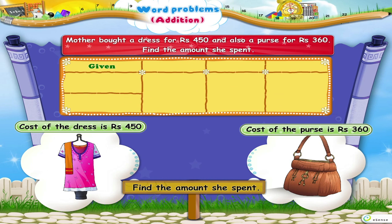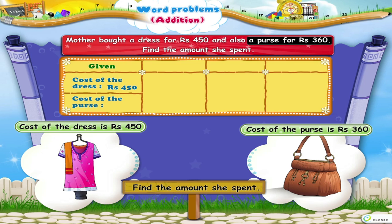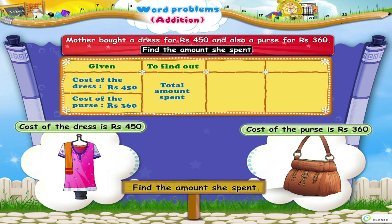What is given to us: cost of the dress is rupees 450, cost of the purse is rupees 360. We have to find the total amount spent. The operation to be done is addition.